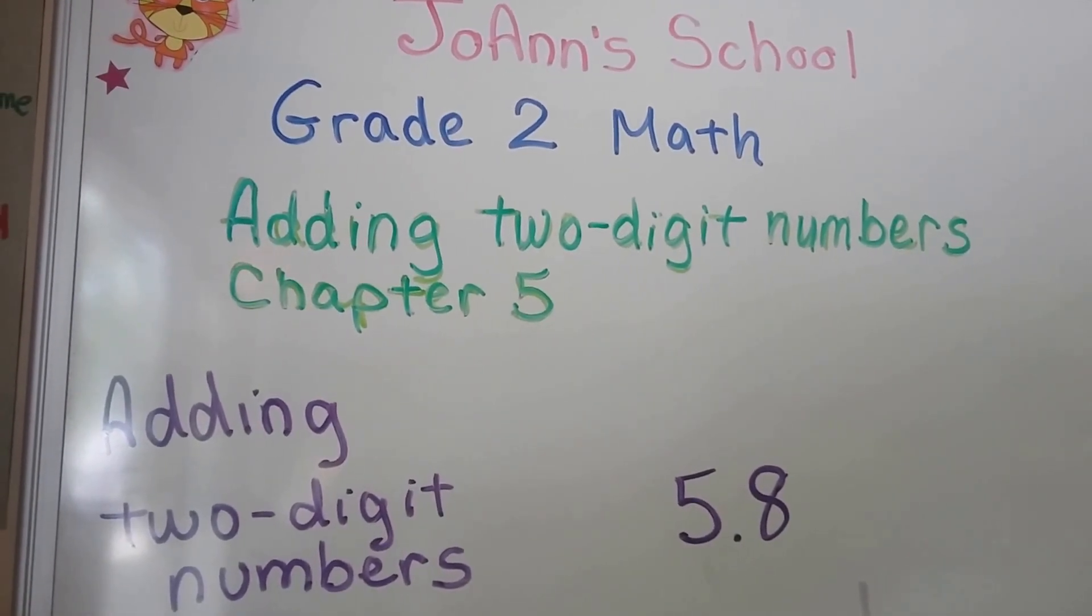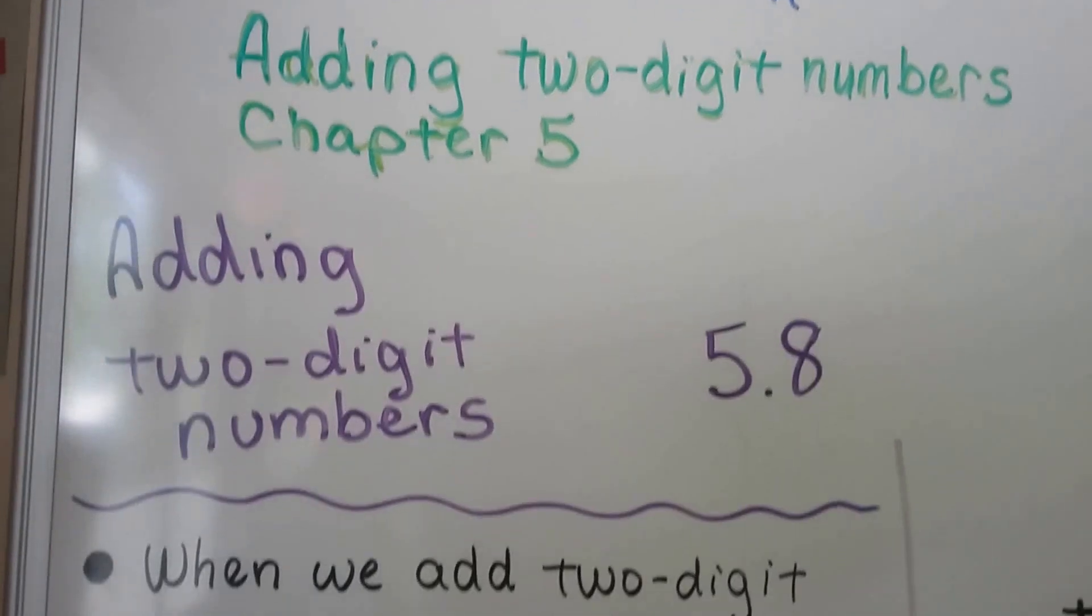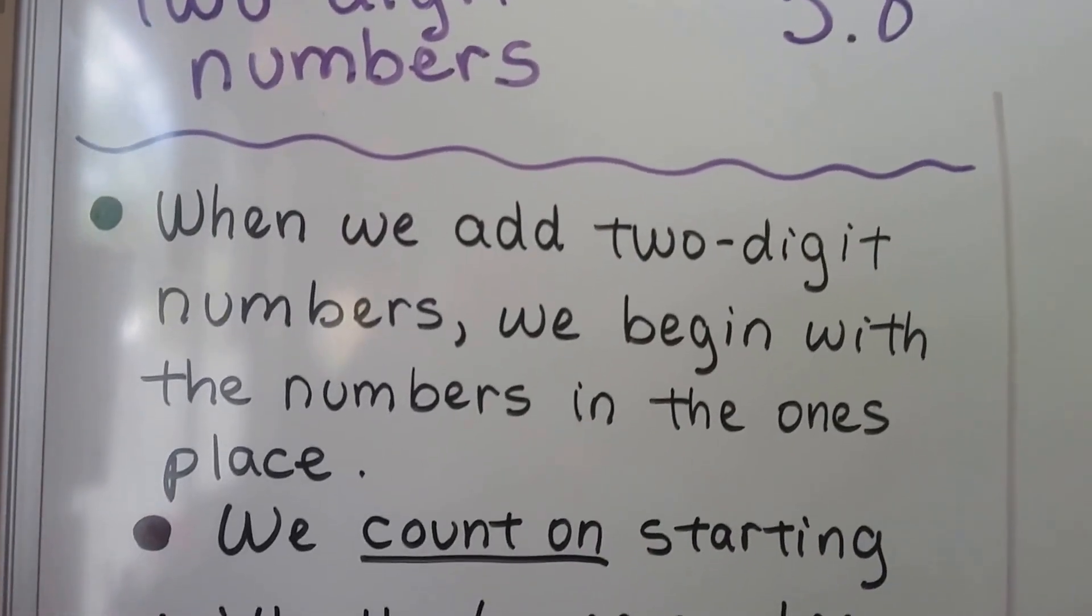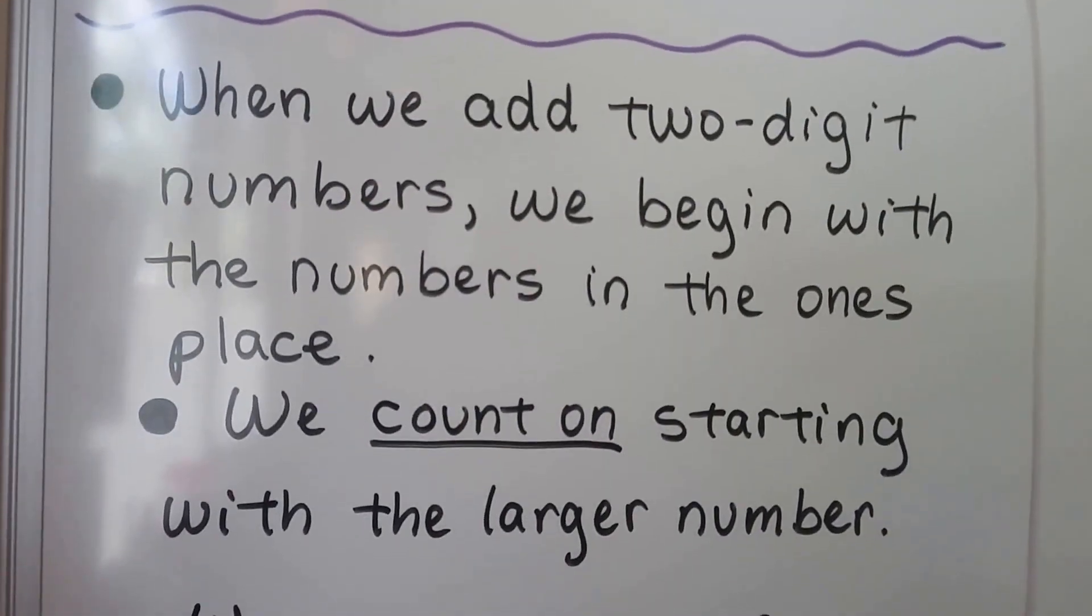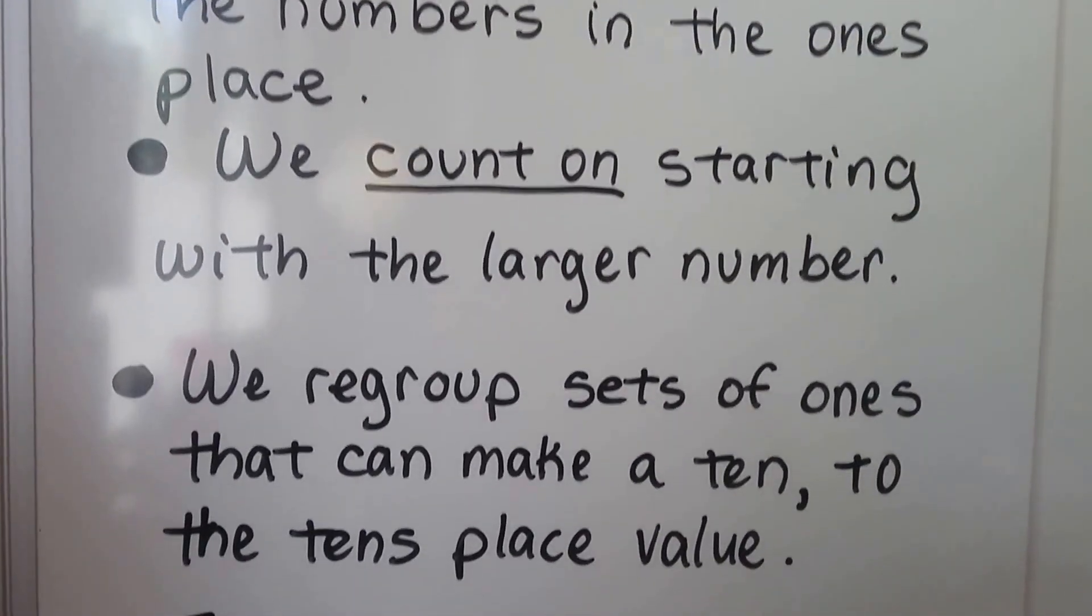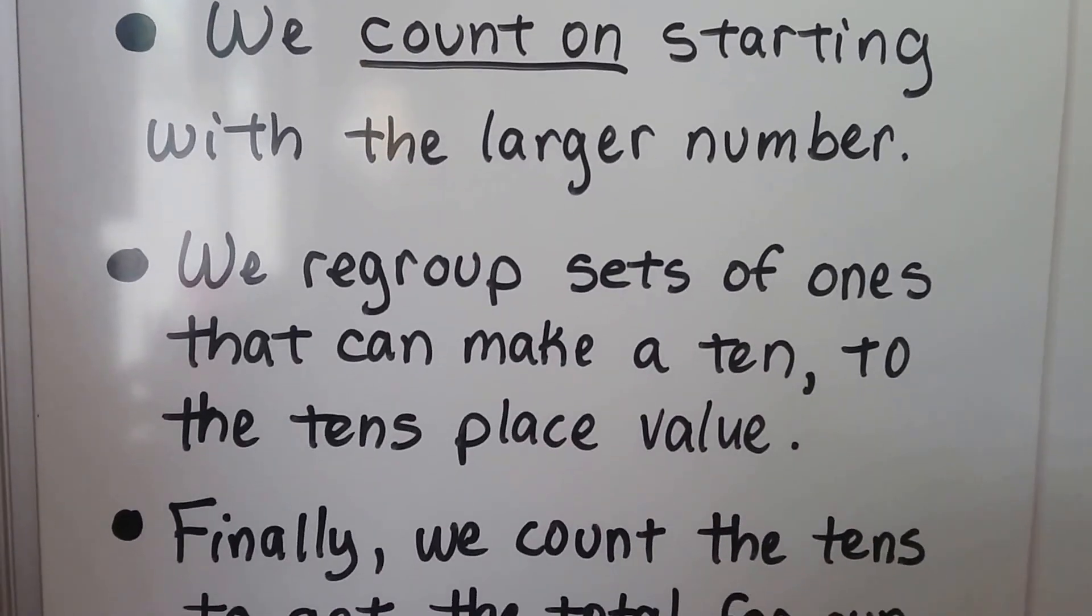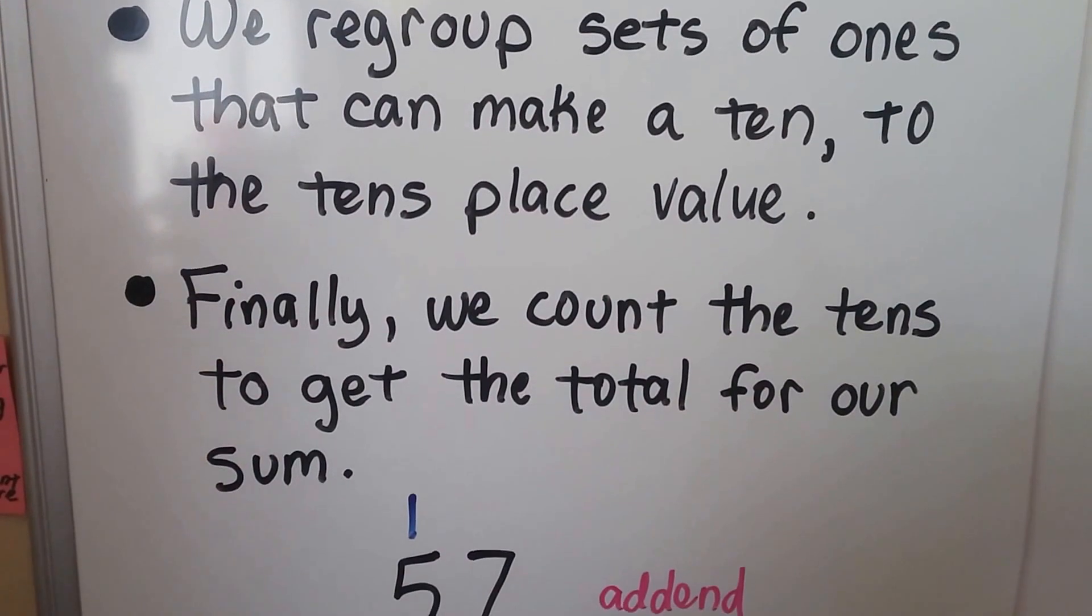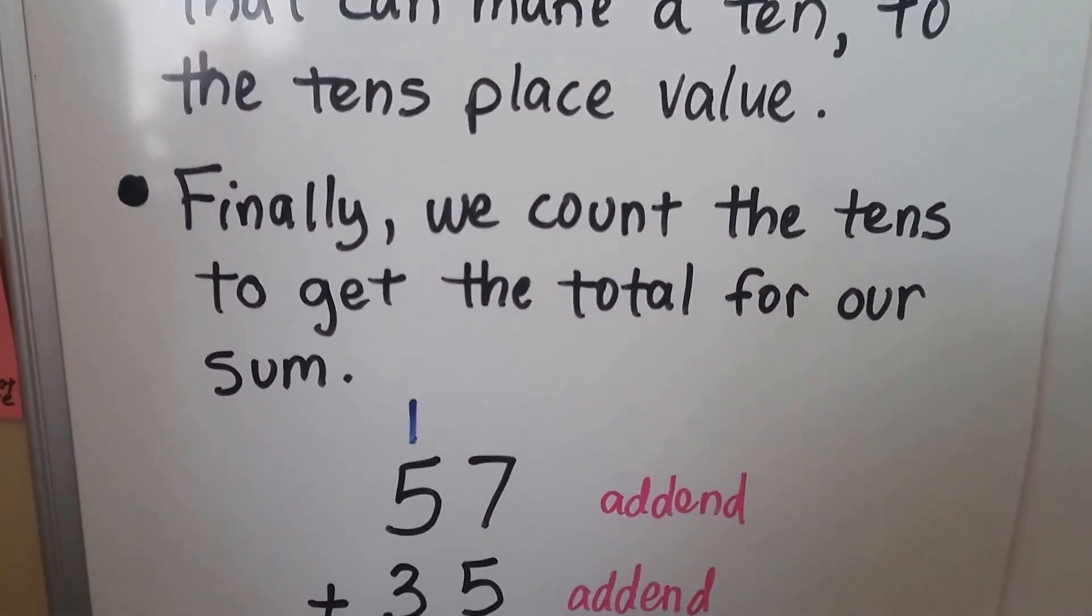Adding two-digit numbers, Lesson 5.8. When we add two-digit numbers, we begin with the numbers in the ones place. We count on starting with the larger number, and we regroup sets of ones that can make a ten to the tens place value. Finally, we count the tens to get the total for our sum.